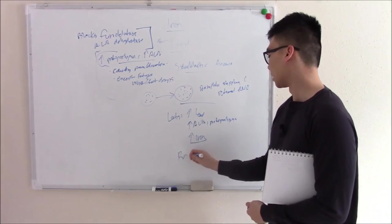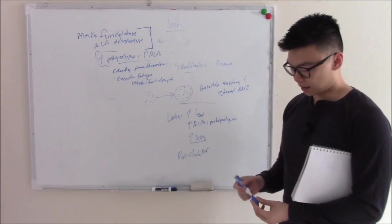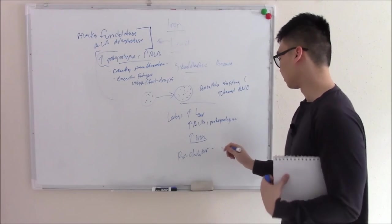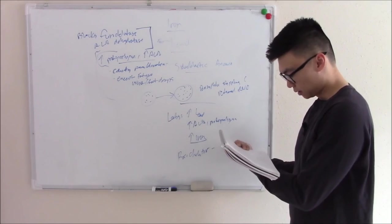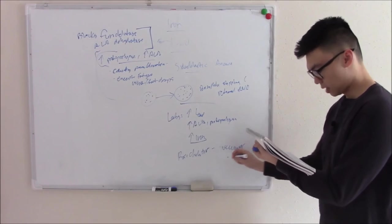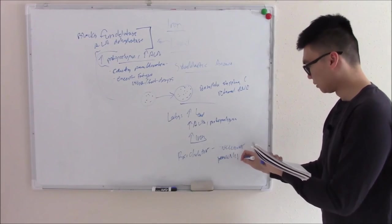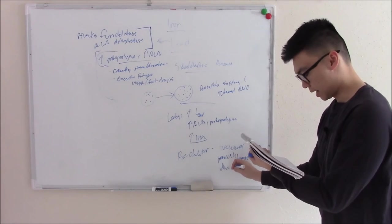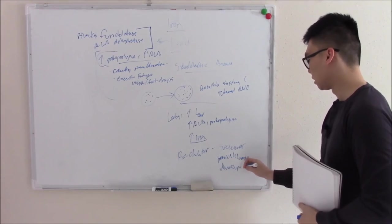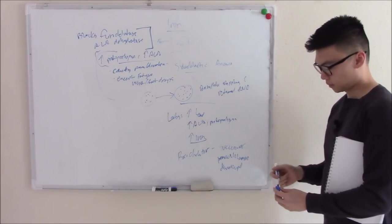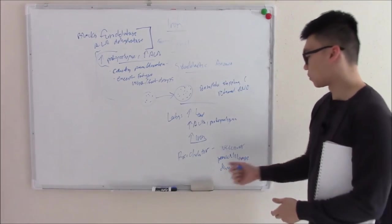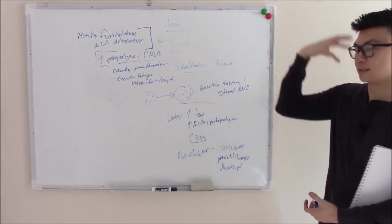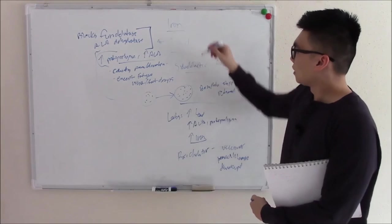And the treatment is going to be chelators. These are things that bind metal. So it'll bind lead and help you excrete it. So these include things like Succimer. Penicillamine. Not penicillin. Penicillamine. And Dimercaprol. Dimercaprol is more for really severe lead poisoning because Dimercaprol can pass the blood-brain barrier and really help in the encephalopathy part. That is lead.